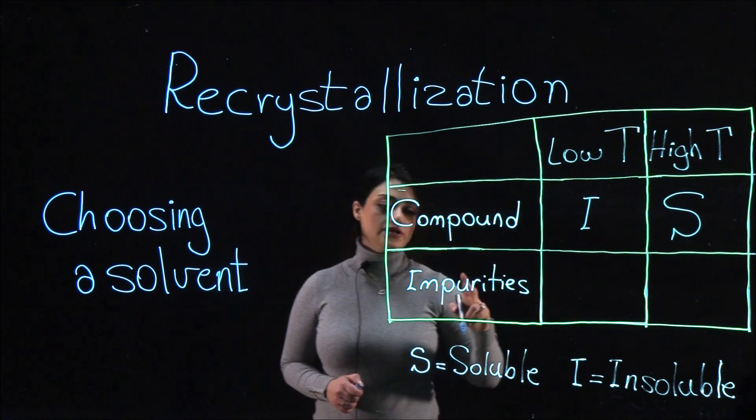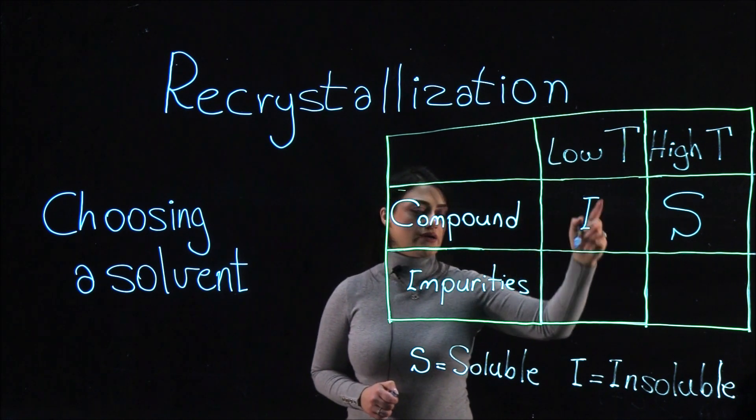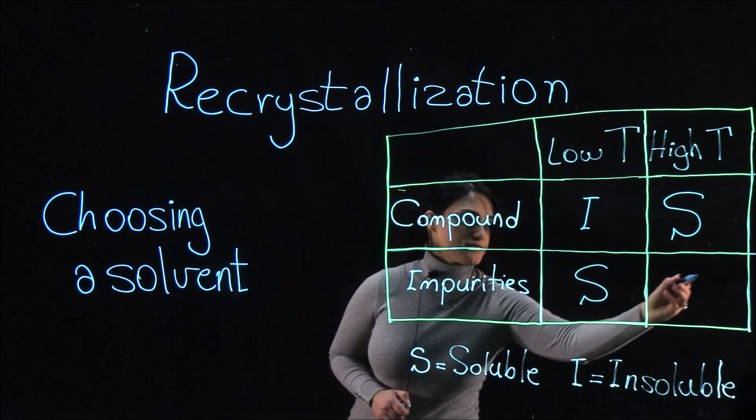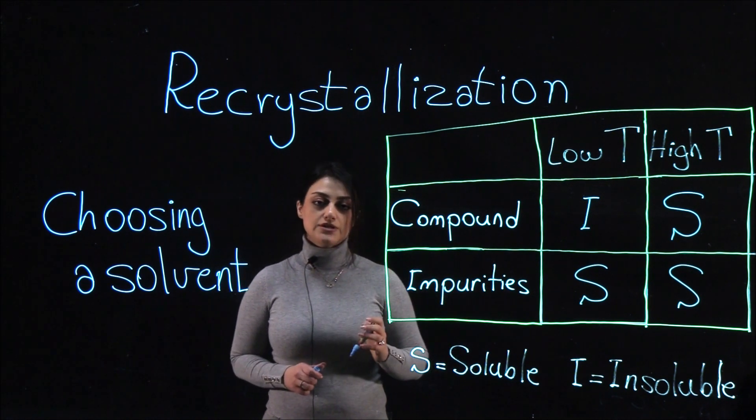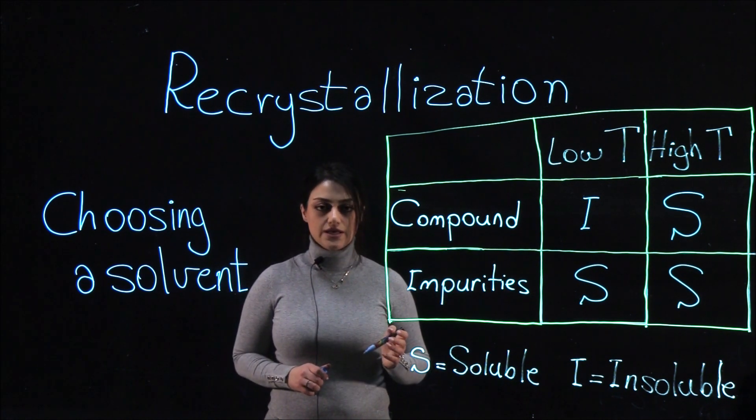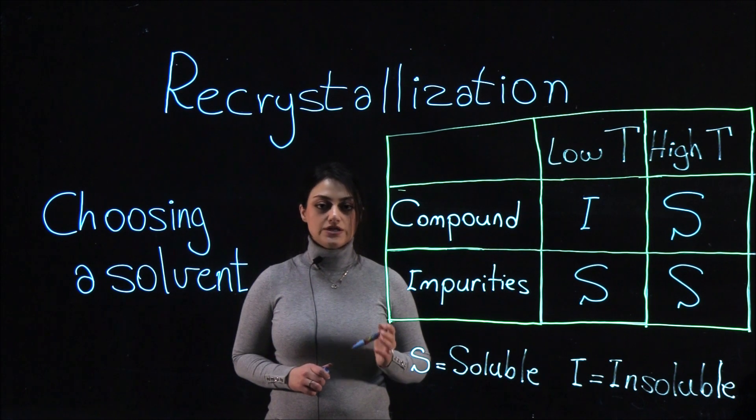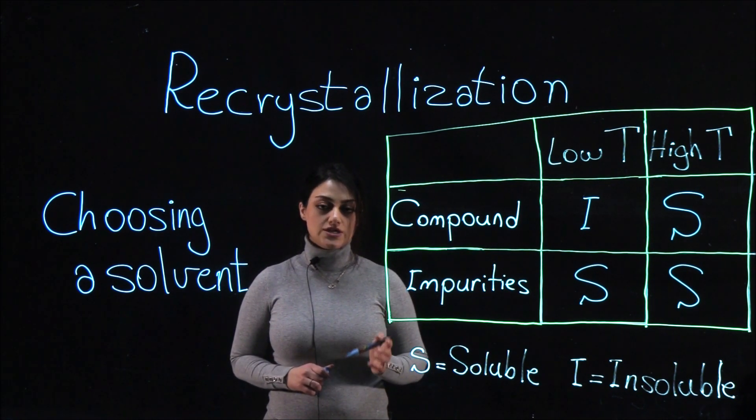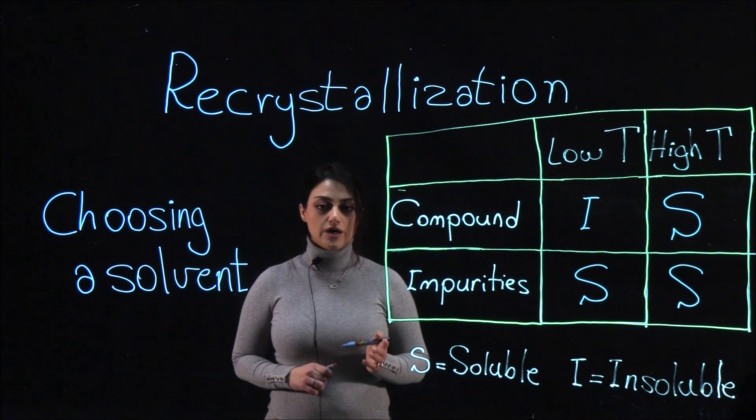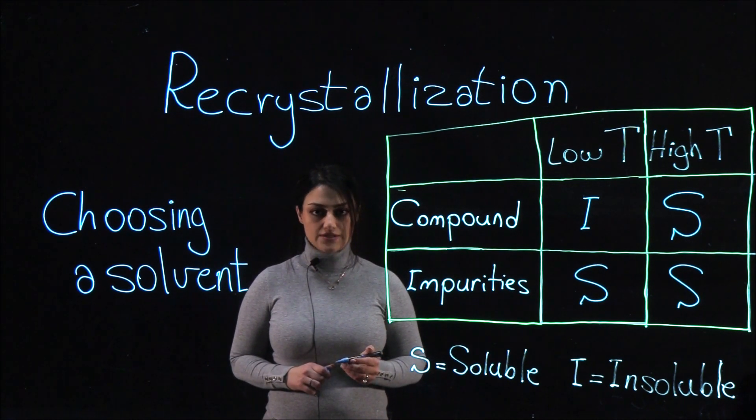Second, the impurities are soluble at both low and high temperatures. This is because we want impurities to remain in the solvent and the desired compound to crystallize. Slightly polar solvents such as ethanol are very common crystallization solvents.